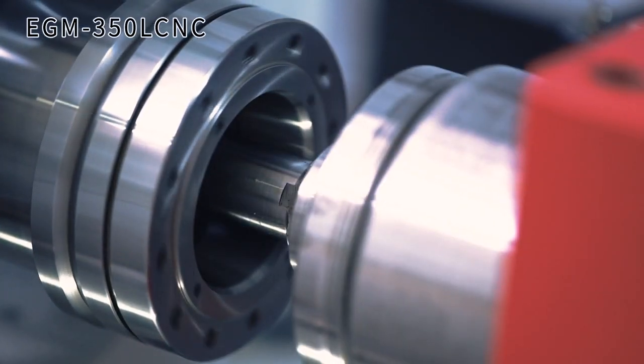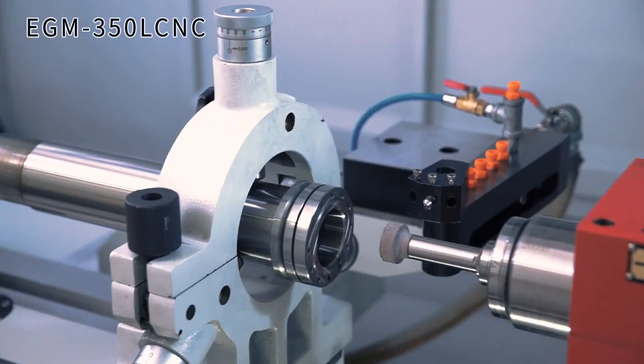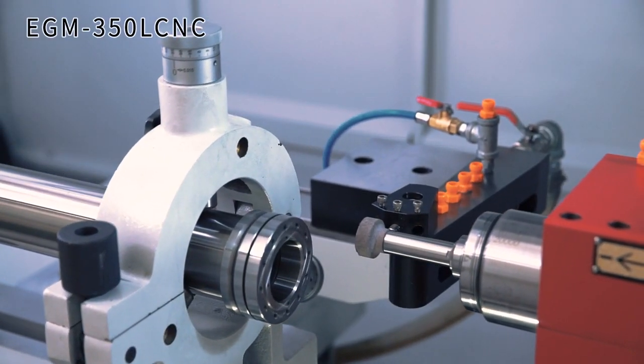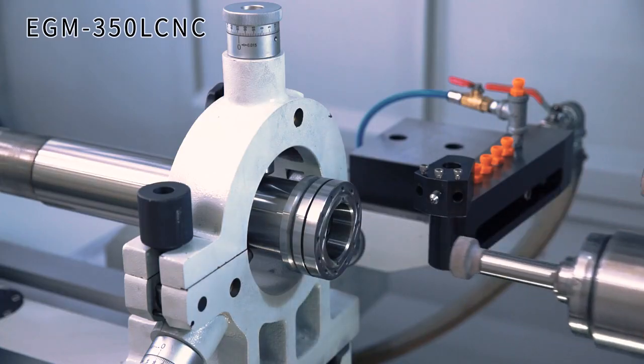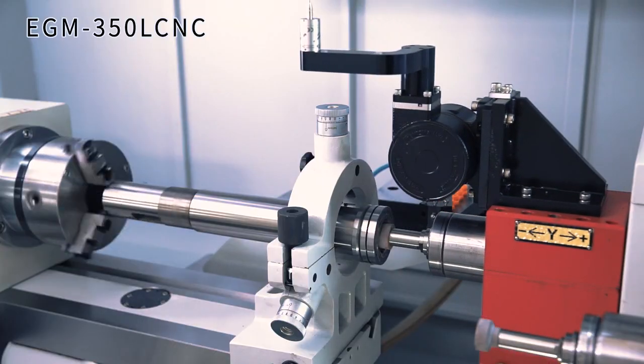The EGM350L is developed specifically for long workpieces, requiring both deep ID grinding as well as OD grinding. It's an excellent choice for users processing HSK spindles.